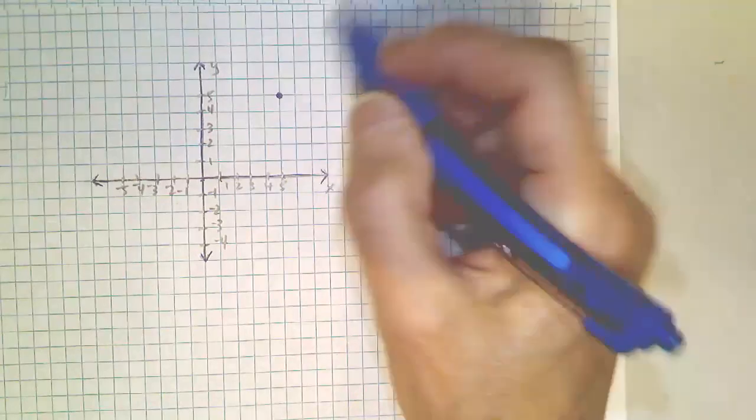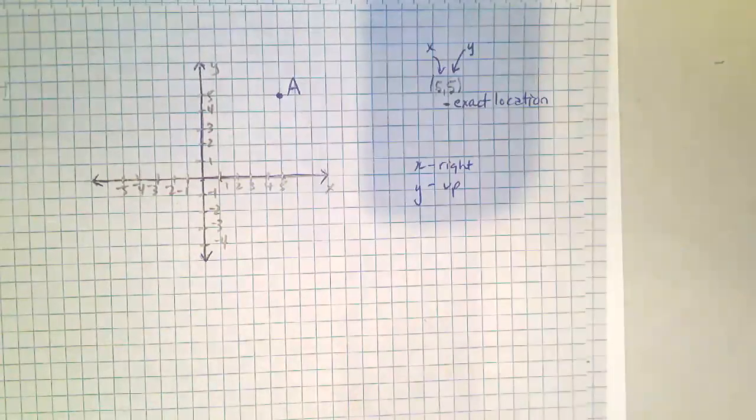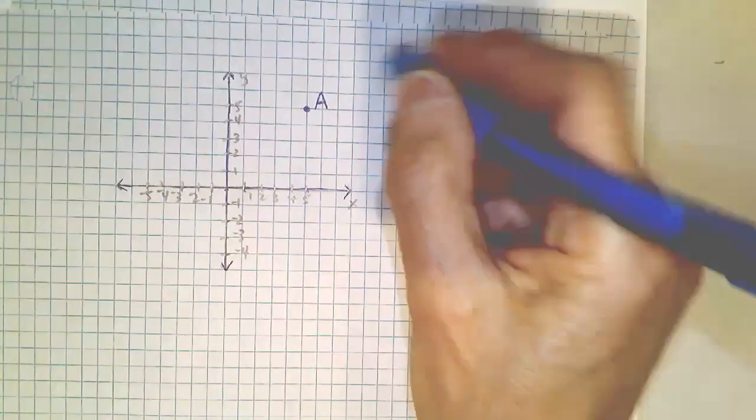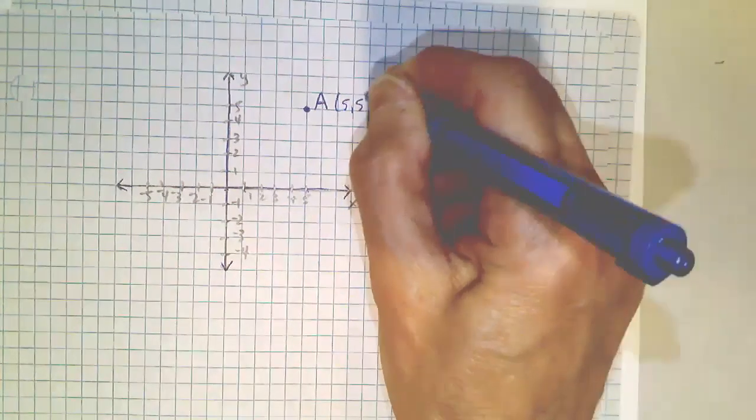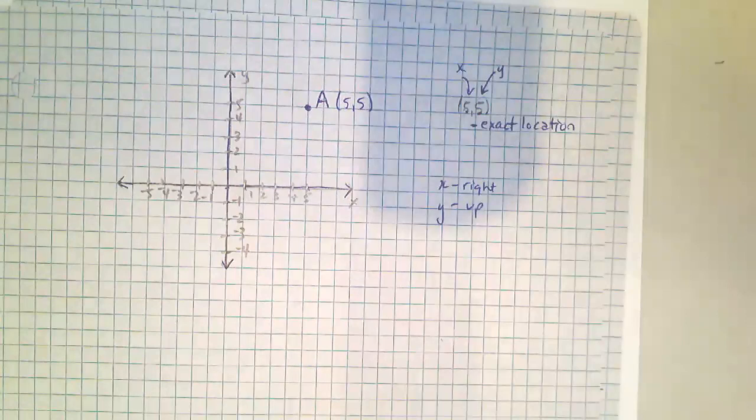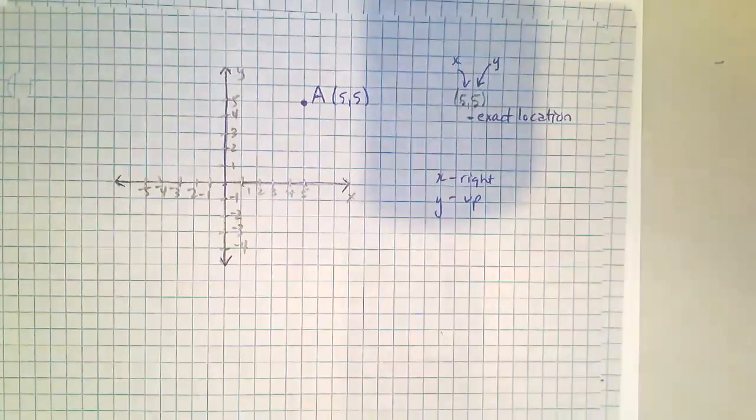And that location right there, which I'll call the capital A, is called a point. That's an exact location designated by the ordered pair five, five. So ordered pairs really are exact locations, points, on a Cartesian graph.